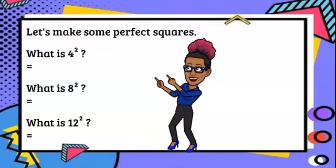Now let's make some perfect squares. Let's go to 4. What is 4 squared? So we have 4 times 4, which is equal to 16. This means we're going to have 4 rows of squares and 4 columns.